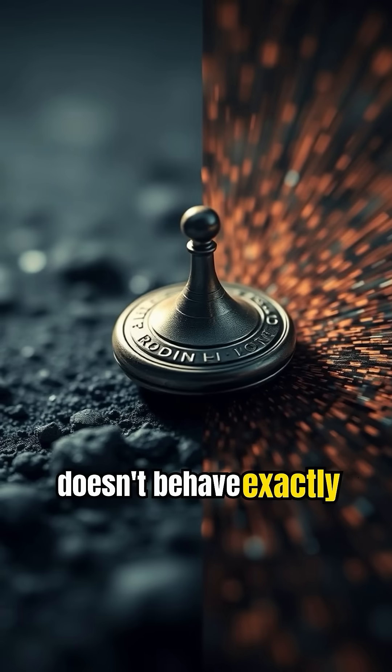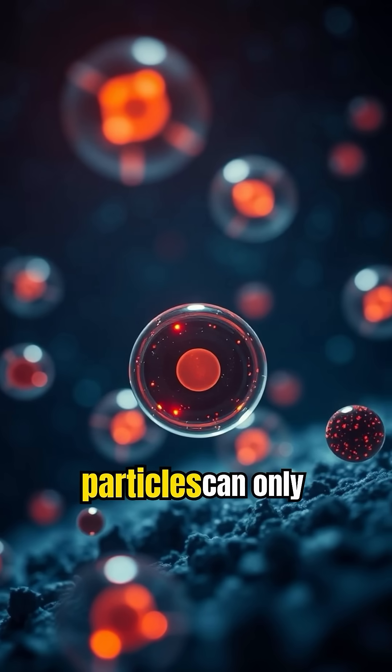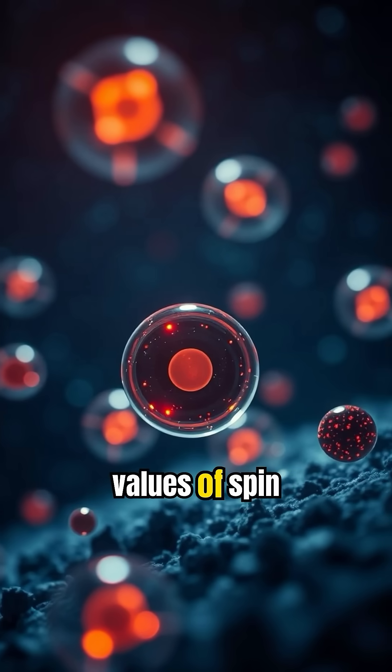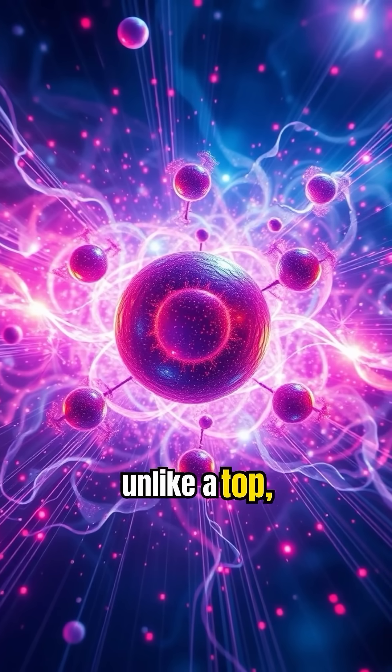It doesn't behave exactly like the spin of a macroscopic object. For one thing, particles can only have certain discrete values of spin, including half values. They can't just spin any way they want. And unlike a top, a particle's spin isn't always pointing in a particular direction.